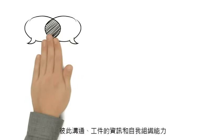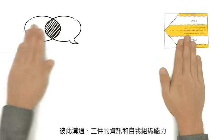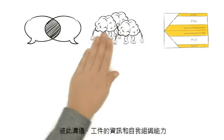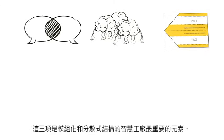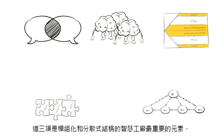Communication with each other, information on work pieces, and self-organization. These are the three most important factors that are necessary for the modular and decentralized structure of a smart factory.